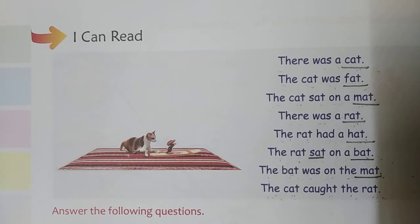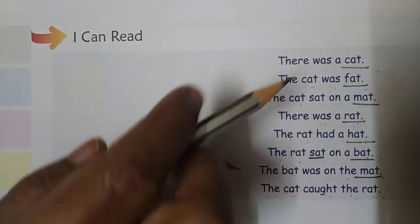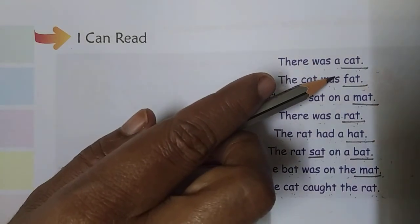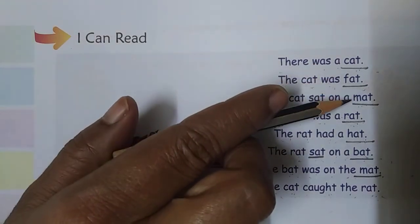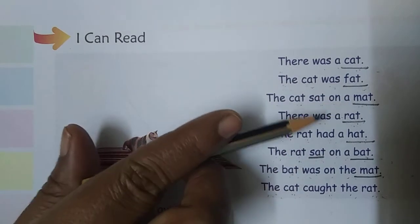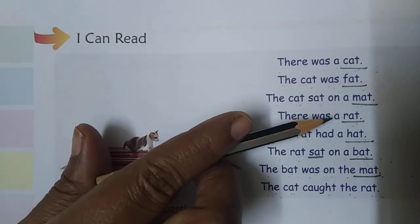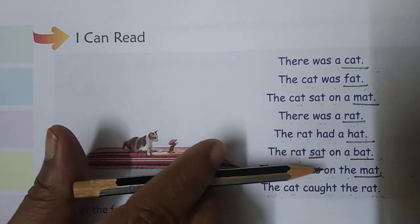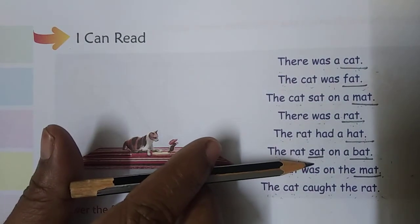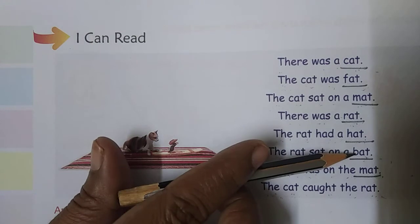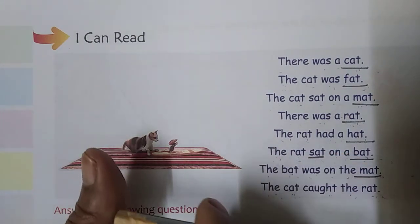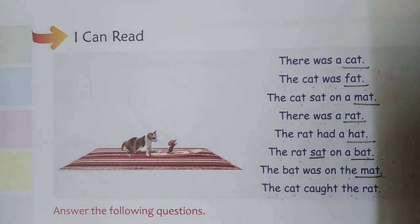Children, here are the rhyming words: cat, fat, mat, rat, hat, sat, bat, mat — these are the rhyming words.